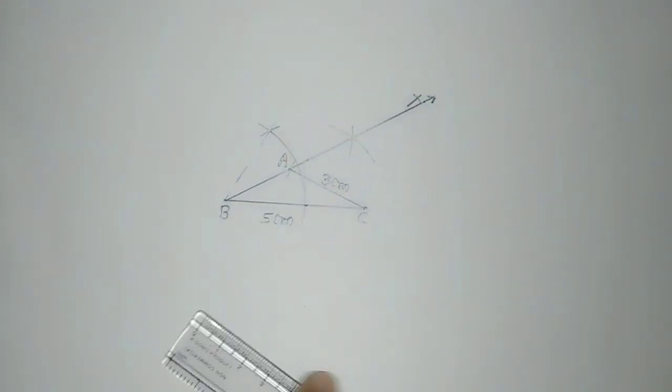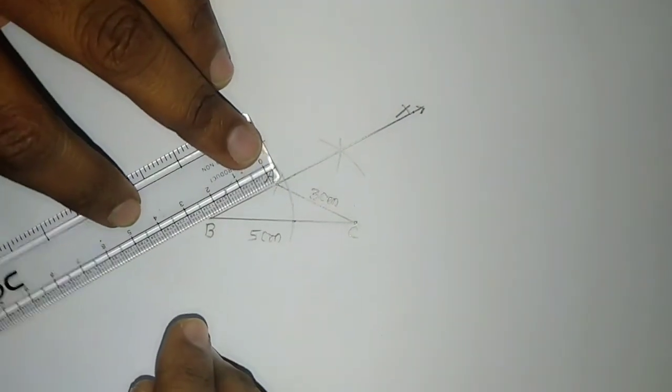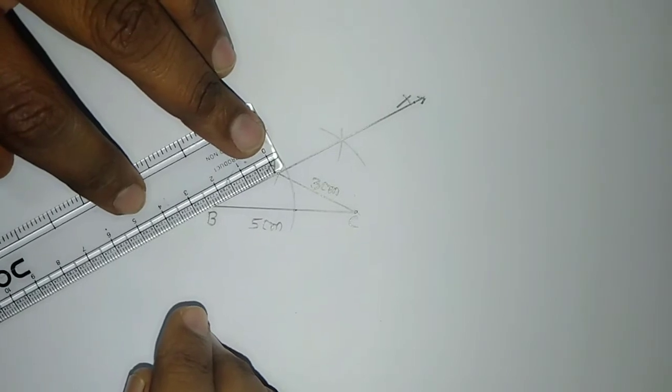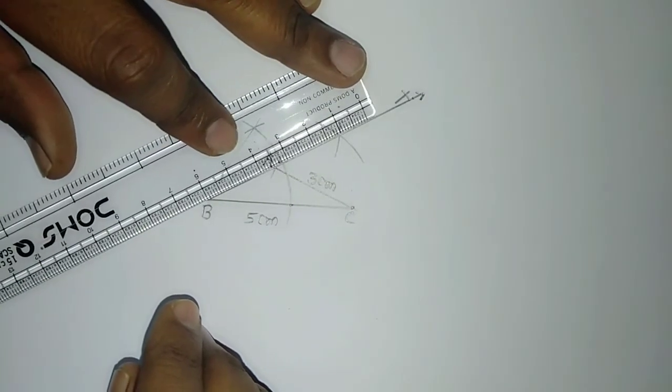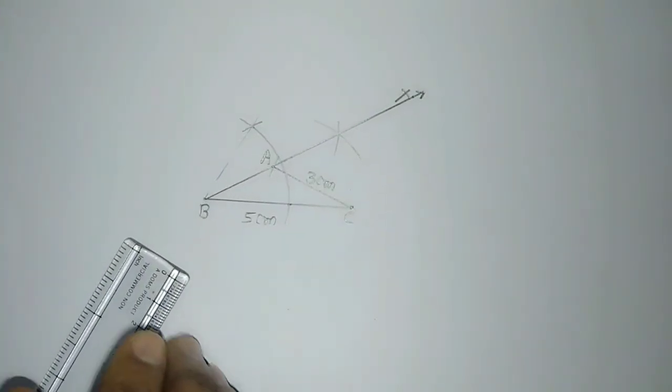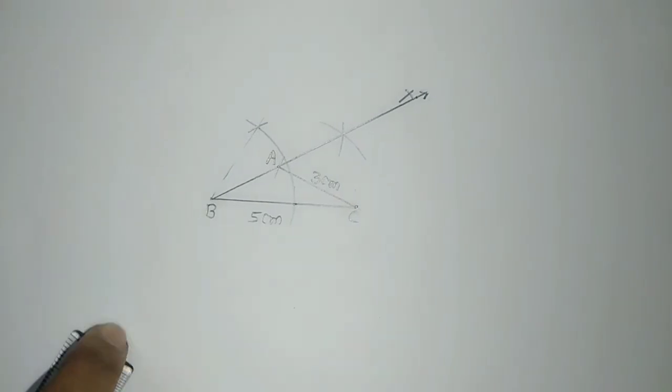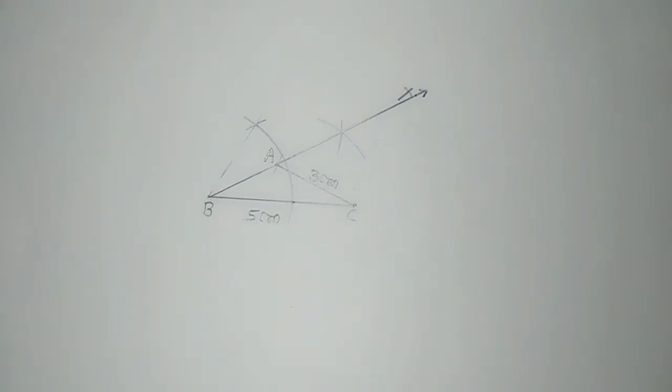This triangle ABC is of our required measure. You can see AB is equal to about 2.5, or even if it would be here then it would be more. That's why I told you the question you were asked - BC equal to 5, angle B equal to 30°, that is okay. But AB is equal to AC is equal to 3cm, that would not be possible.